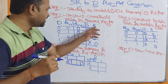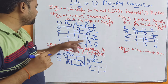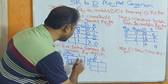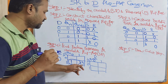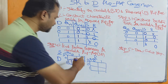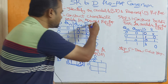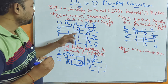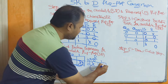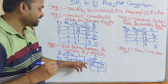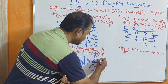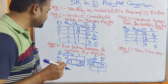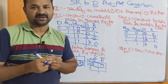Likewise, find the Boolean expression for R. Observing the R column, we have a don't care and a 1 in the cells where D=0. We can group those two cells; D value is 0, meaning D-bar, and QN changes from 0 to 1 so it is not considered. Therefore the expression for R is D-bar. So the expression for S is D and the expression for R is D-bar.